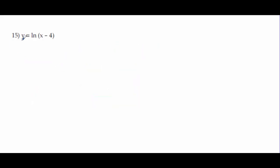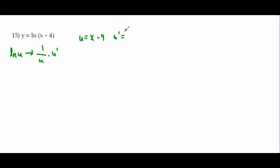Problem 15 starts the natural logarithm section. The derivative of ln(u) is (1/u) times u′. Here u = x − 4 and u′ = 1, so: 1/(x − 4) times 1, which is just 1/(x − 4).